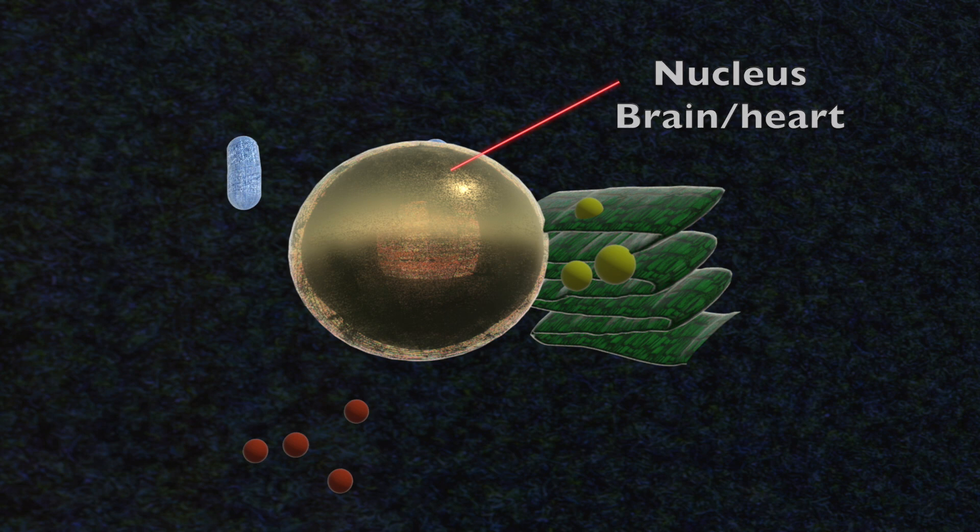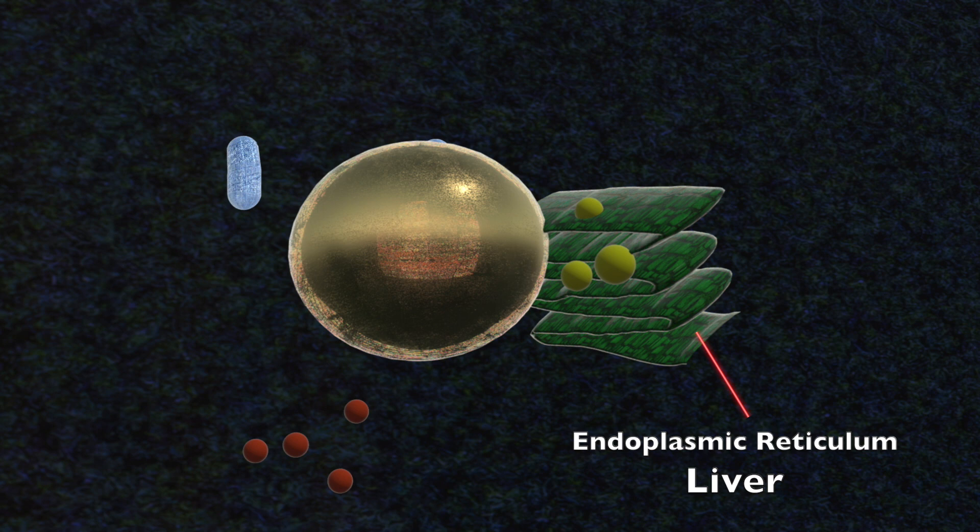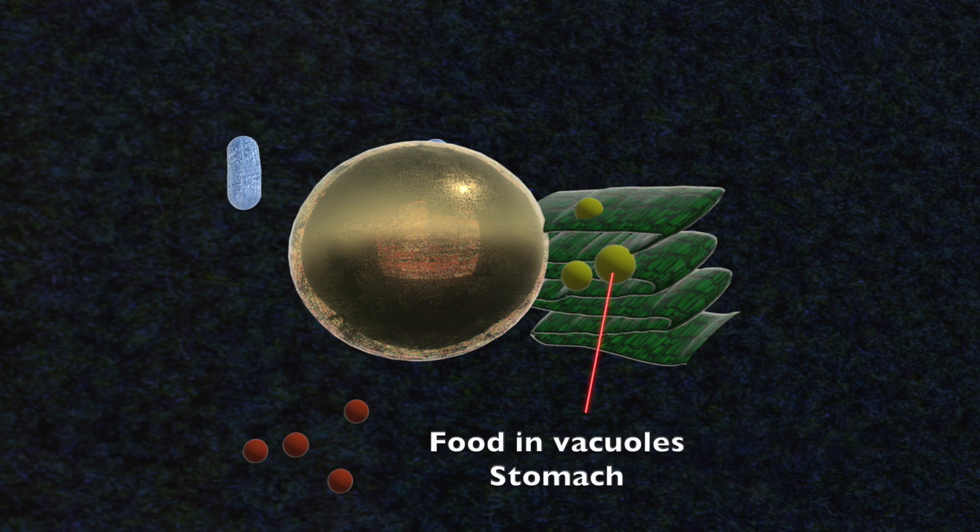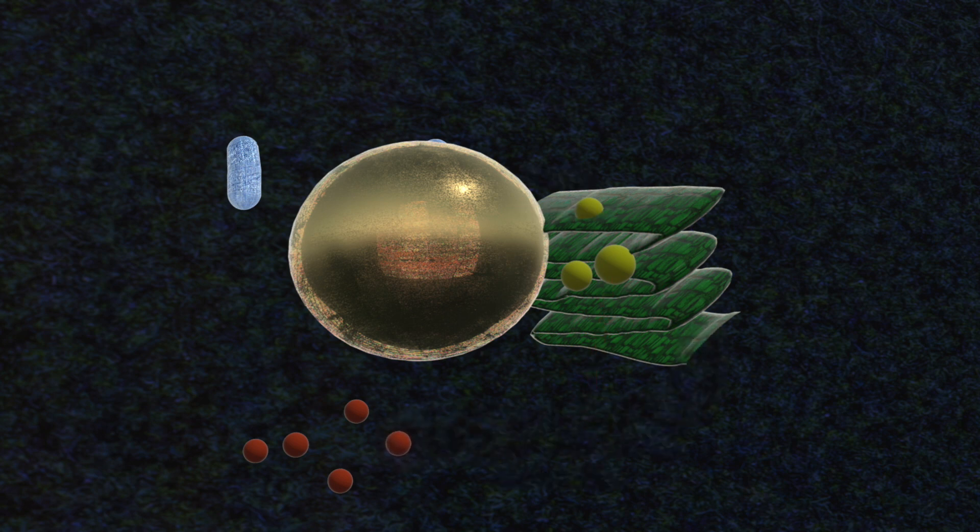The nucleus sends messages to the endoplasmic reticulum via RNA. The endoplasmic reticulum then takes the food which has been absorbed into the cell and takes the instructions from the RNA and uses it to build proteins. In this way, the endoplasmic reticulum behaves like a liver.